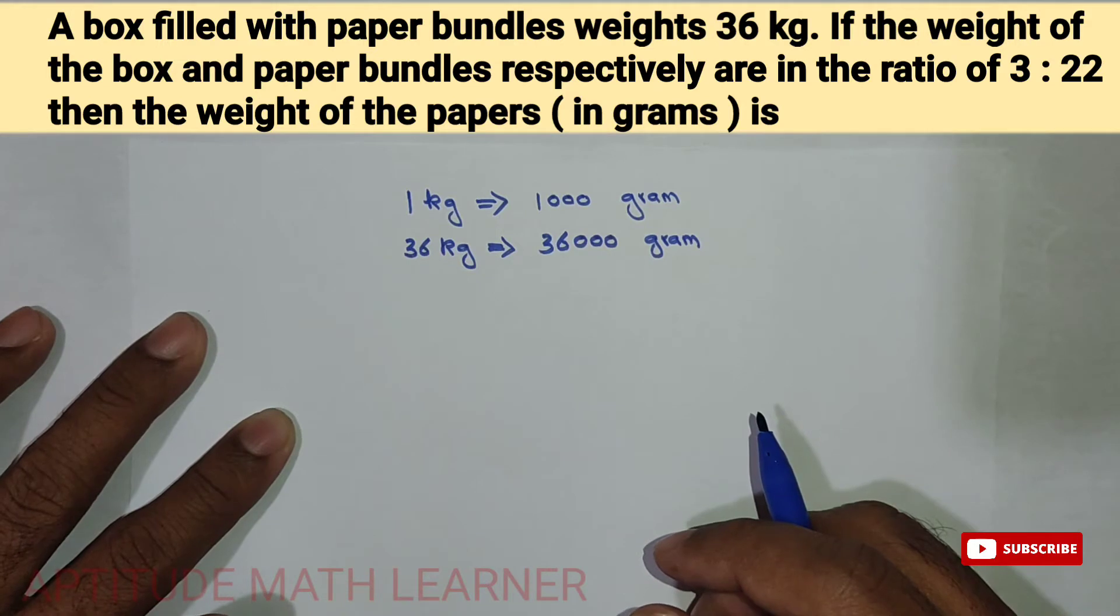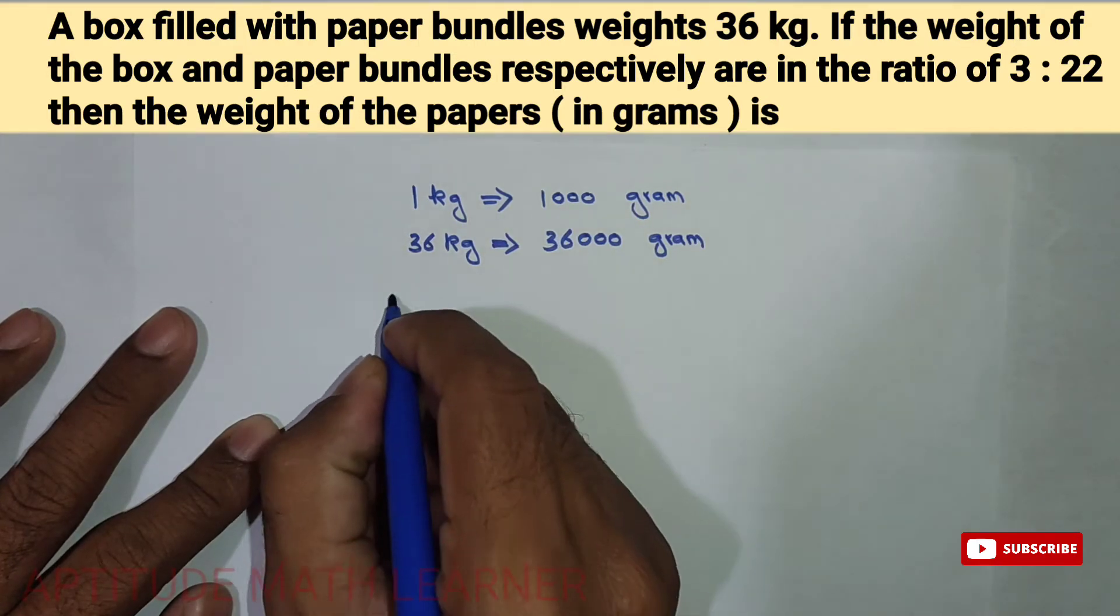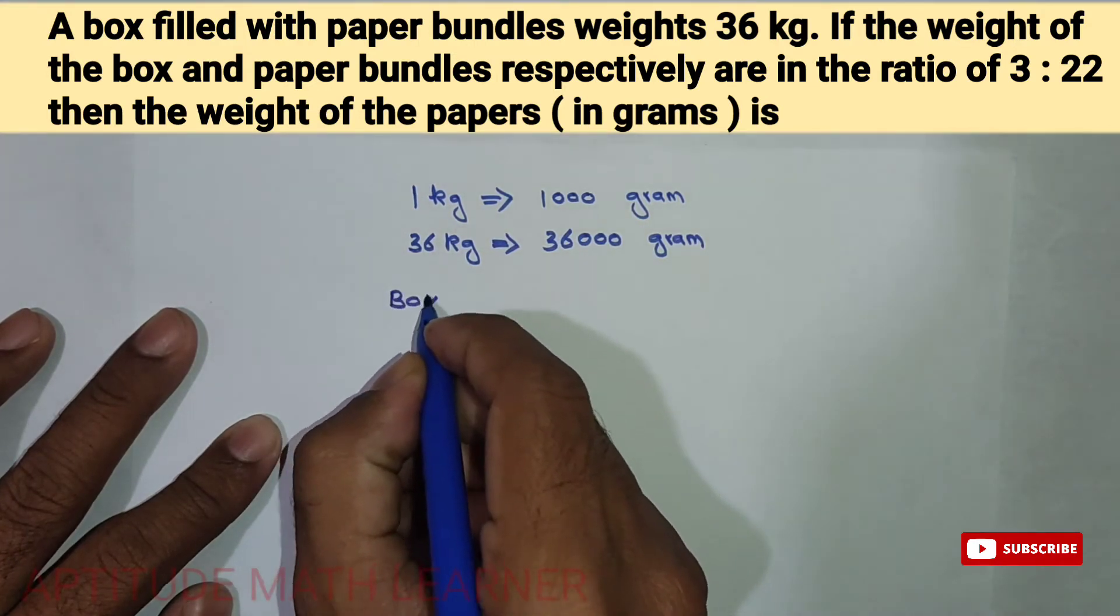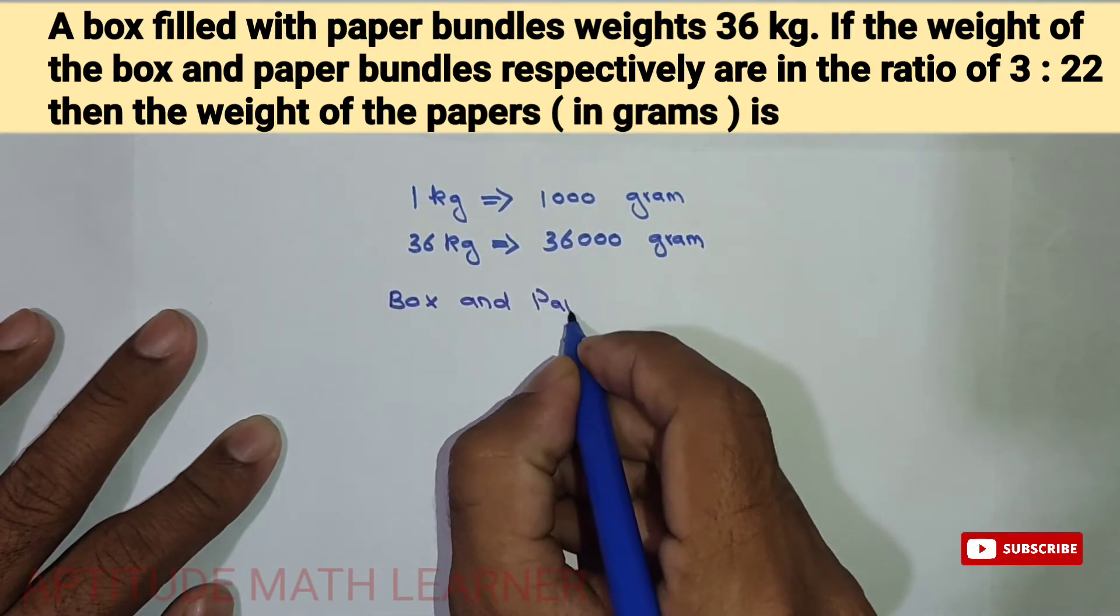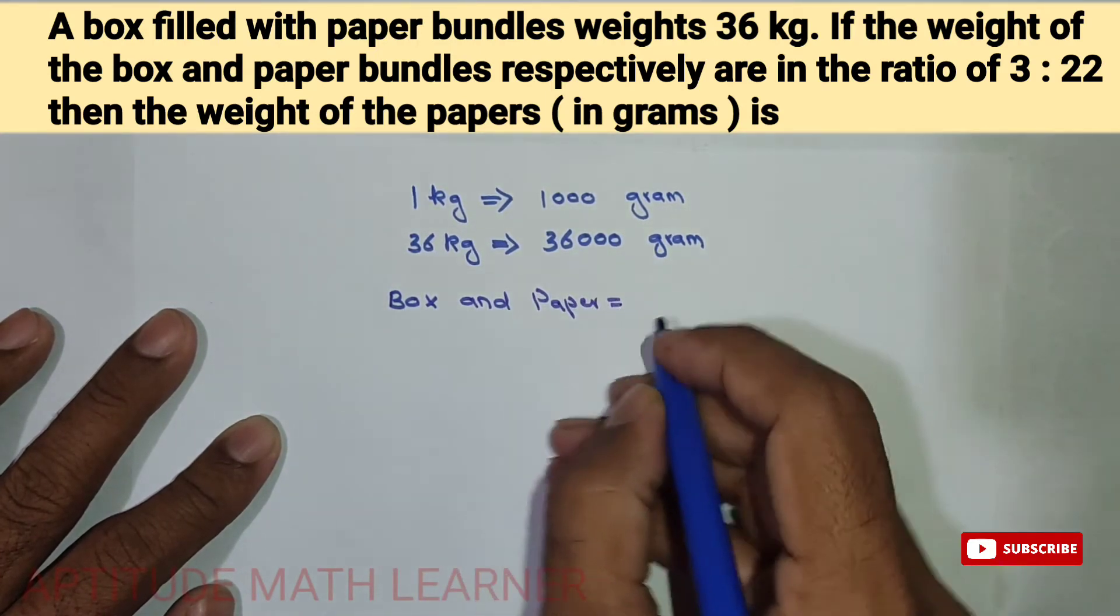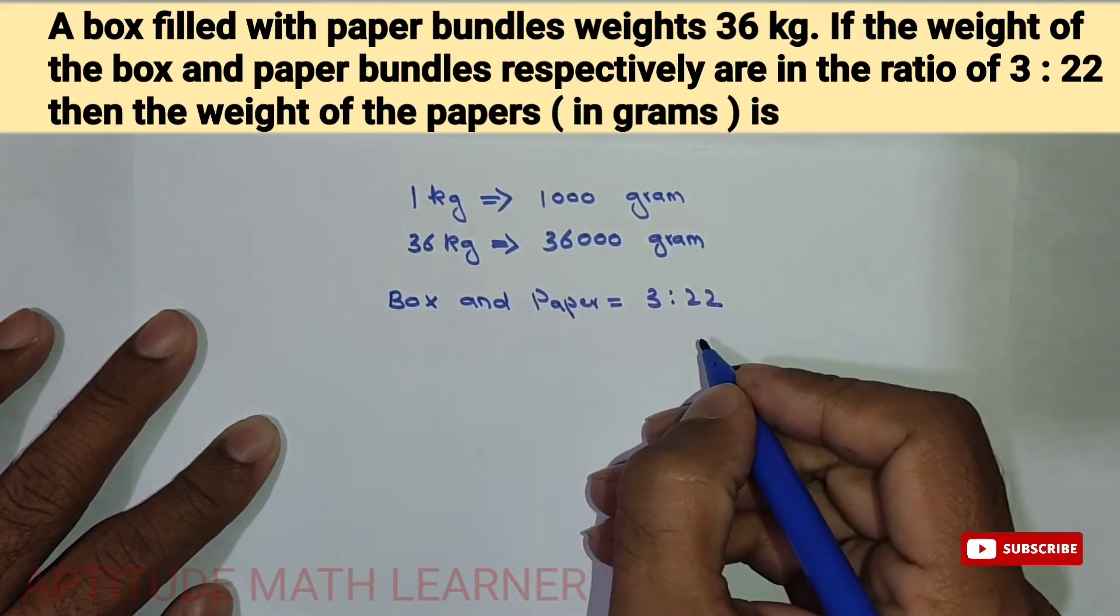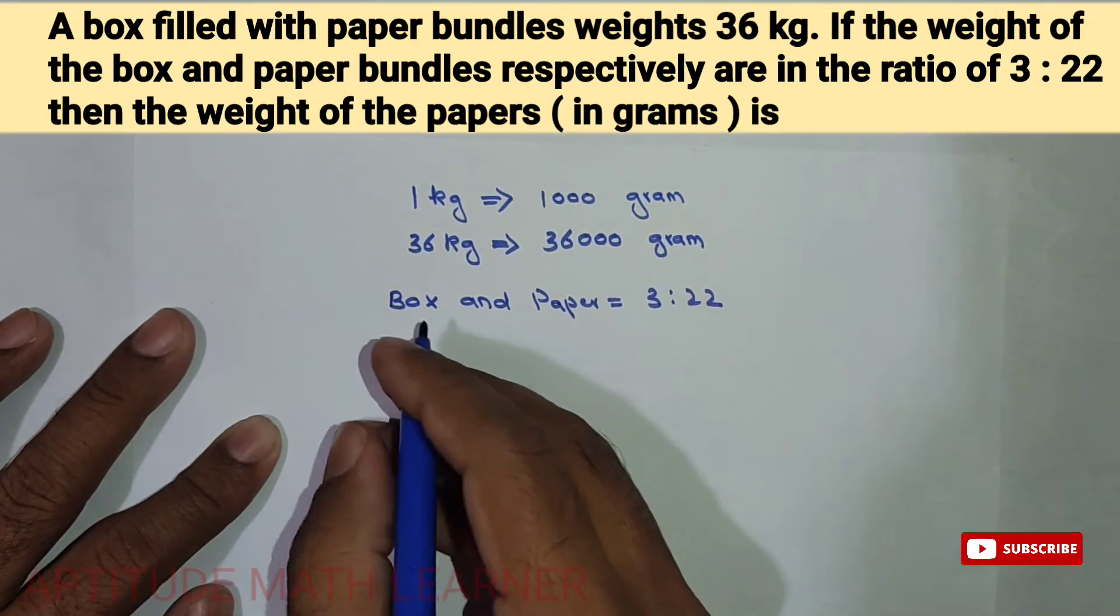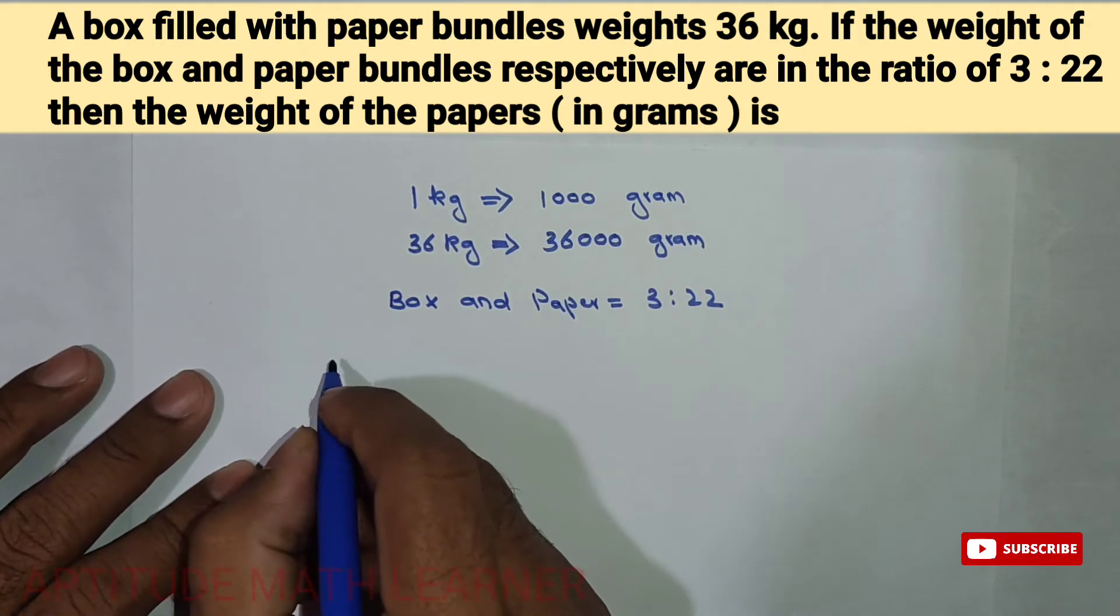The ratio of paper and the box is given, that is 3 is to 22. So box and papers are in the ratio 3 is to 22. So we take here: let the weight of box and paper be 3x and 22x.